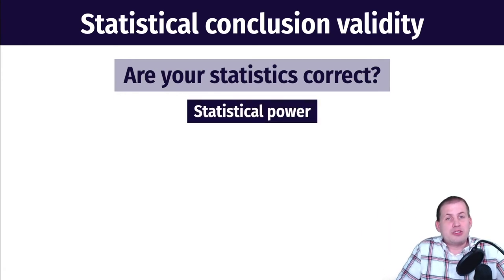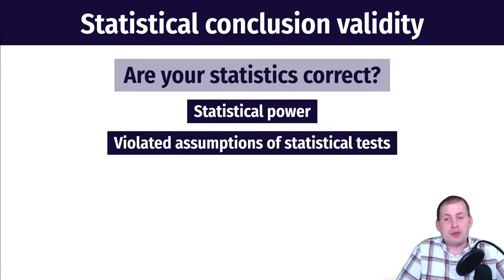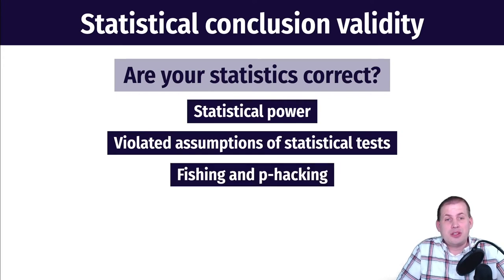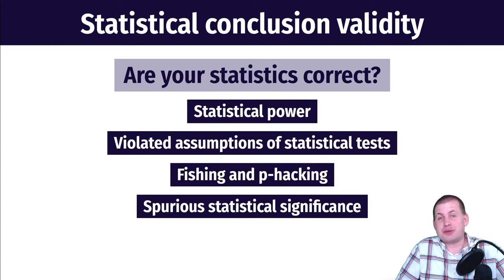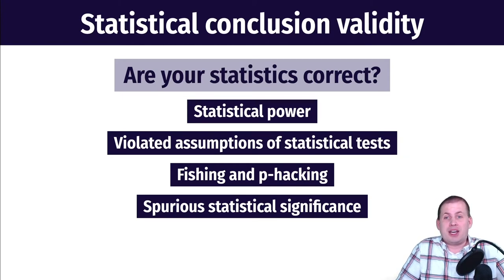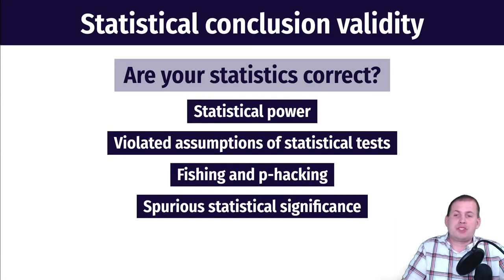You can have issues with statistical power. You can violate assumptions of statistical tests. You can engage in fishing and p-hacking. And finally, you can just have spurious statistical significance — you see a relationship and assume it's true, but it might not be. So we'll talk about each of these in turn.